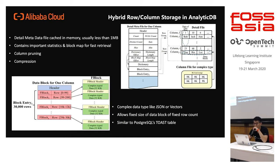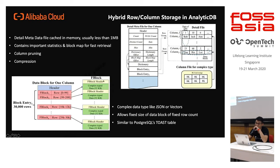For complex data types like JSON or vectors, they are unpredictable in size — they could be 1 MB, 10 MB, 16 MB. If you try to accommodate them in the same file, you'll have problems because sometimes when you read a block it's 4K or 8K, and sometimes it's 16 MB. So we have a design very similar to Postgres TOAST: if you have JSON or complex data types, the main file stores just a pointer to an additional file. This allows the main file to remain fixed-size and efficient.